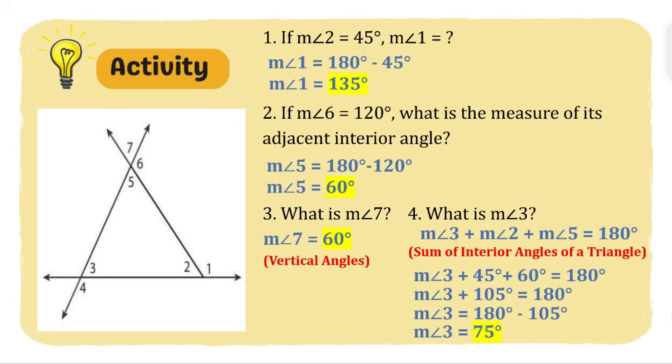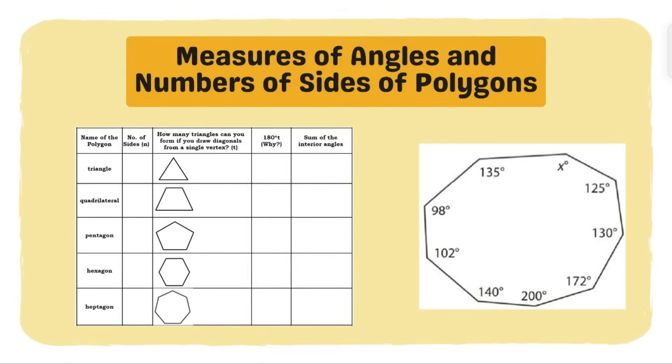So those are the answers to our activity. I hope you learned something. For our next lesson we will explore the measures of angles and numbers of sides of polygons. We will find out the formula for getting the sum of interior angles of any polygon, and then we can solve problems where angles of polygons are missing. I hope to see you in the next video. Thank you very much for watching.